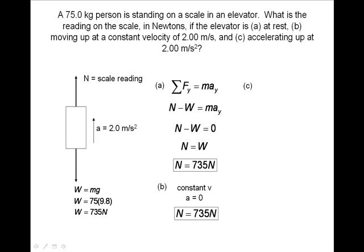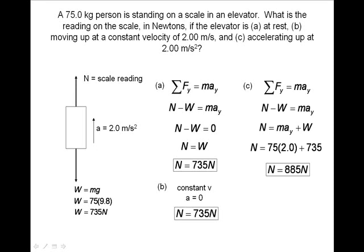In part C, the elevator is accelerating upwards at a rate of 2 meters per second squared. We will use our net force equation, input our variables, rearrange our equation to solve for N by adding W to both sides, substituting our values, and find our normal force to be greater than our original weight. If the elevator was accelerating downward, we would weigh less than our original weight.